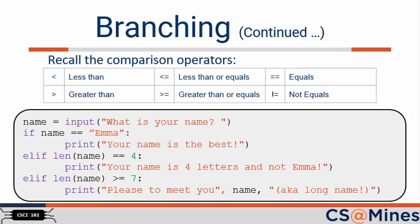Here's another if example. If the user inputs EMMA, the first if will evaluate to true and 'your name is the best' will be printed. Nothing else will print, even though EMMA has a length of four. What if the user inputs LUKE? In that case, 'your name is the best' will not print, but 'your name is four letters and not EMMA' will print. Finally, consider what happens if the user enters GRACE. GRACE is not equal to EMMA, GRACE is not equal to four characters, and GRACE is not more than seven characters — thus, nothing will be printed to the screen.